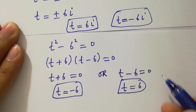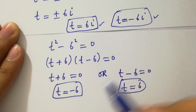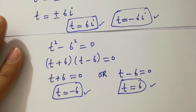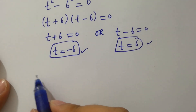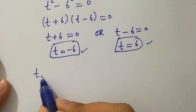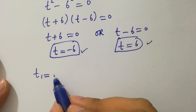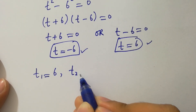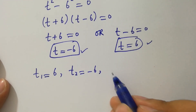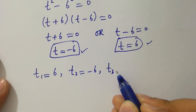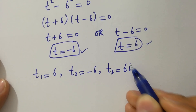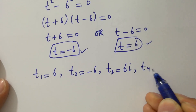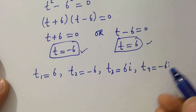As you can see, we have four solutions: t₁ equal to 6, t₂ equal to minus 6, t₃ equal to 6i, and t₄ equal to minus 6i.